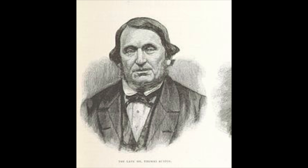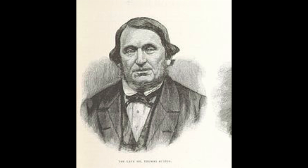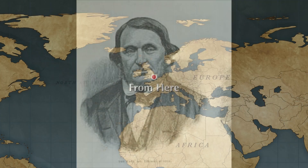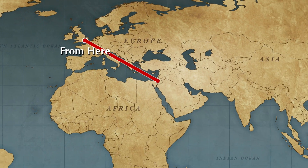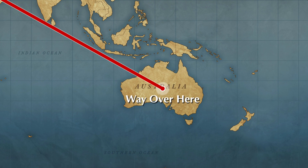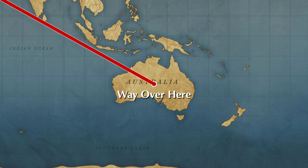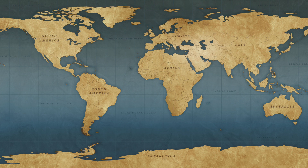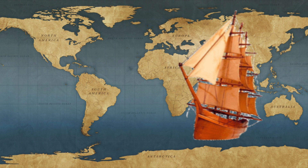Knock knock at the door — it's Thomas Austin, someone who introduced an invasive species to the beautiful country of Australia. Thomas Austin was a sailor in 1859 who traveled from Europe to Australia. He knew he was going to be lonely way down in Australia, so what did he bring with him on his ship?